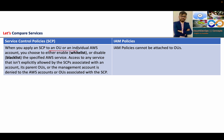When you apply SCP to an OU or an individual AWS account, you choose either enable — which is a whitelist — or disable — which is a blacklist — of specified AWS services. In my previous lecture I showed how you can deny access and disable access to particular resources; one example was Shield. Access to any service that is not explicitly allowed by the SCP associated with the account, a parent OU, or a management account is denied by default. So if you are not doing an explicit allow, then everything is denied by default in your organization, unit, or AWS account.